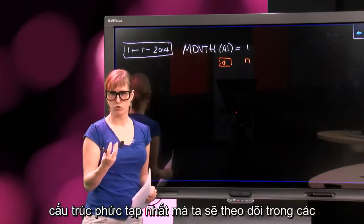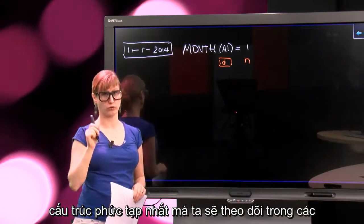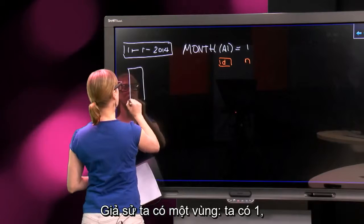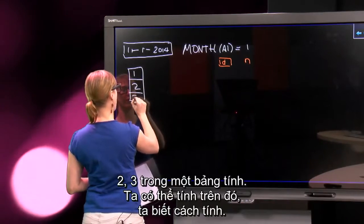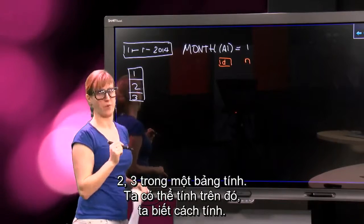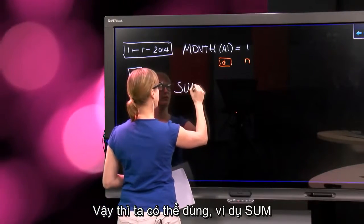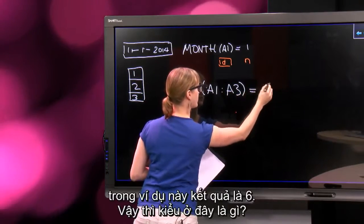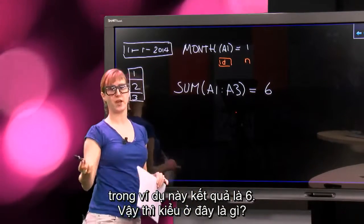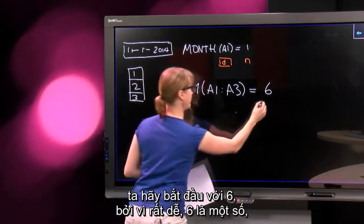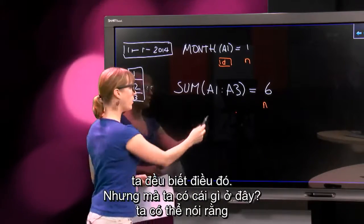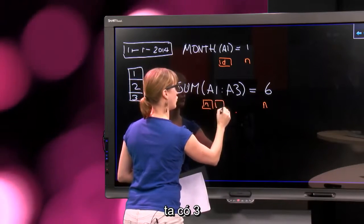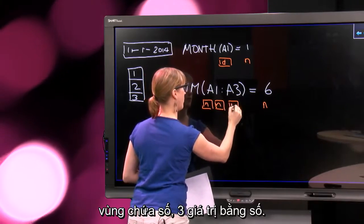Now let's have a look at the most complicated construction we're going to look at in this week's videos — it's still pretty basic, I hope. Suppose we have a range: 1, 2, 3 in a spreadsheet. We can say something like the sum of A1 to A3, which in this case is 6. So what are the types here? Let's start with 6 — 6 is a number. But what do we have for the input? We could say we have three number containers, three values that contain a number.